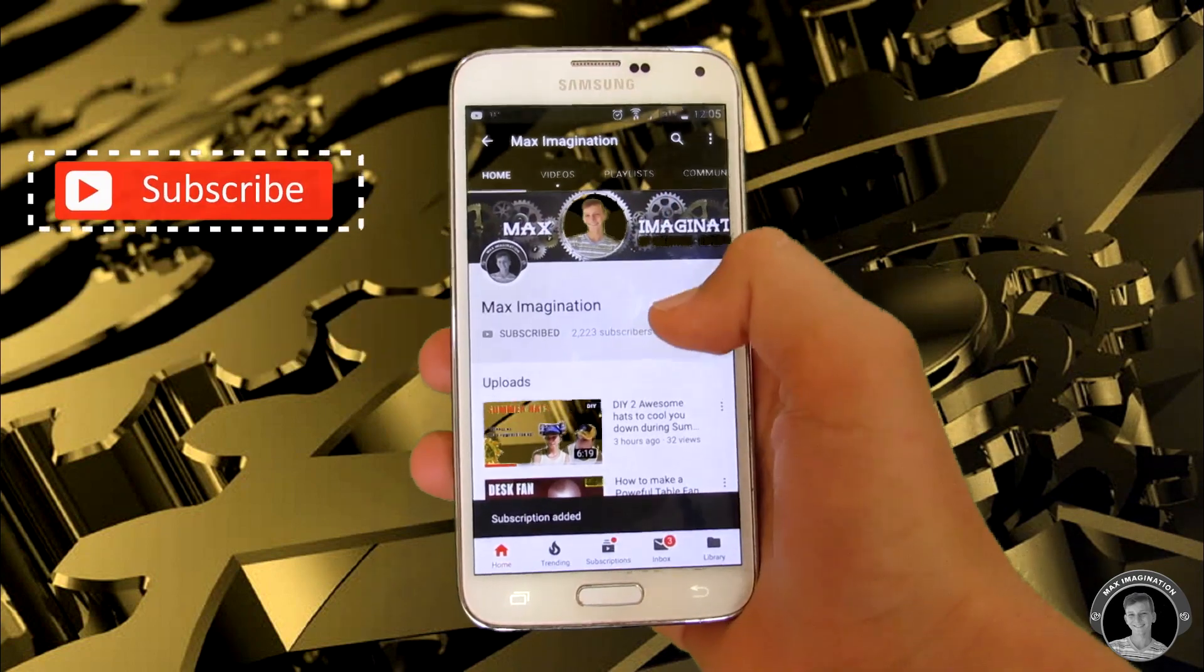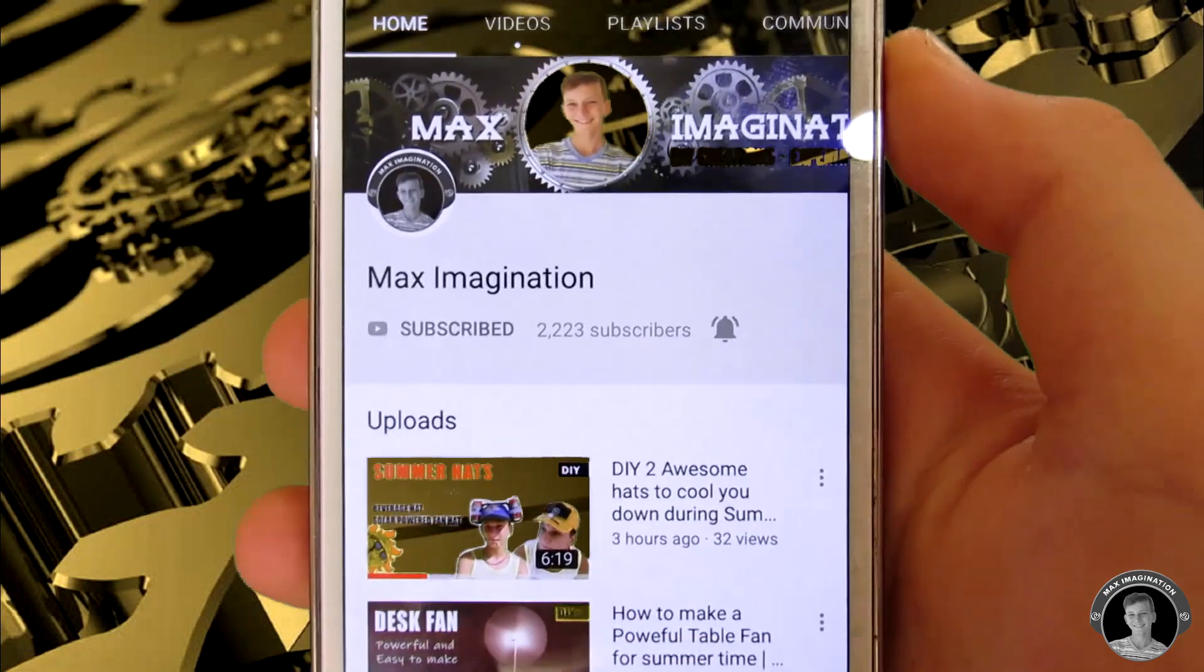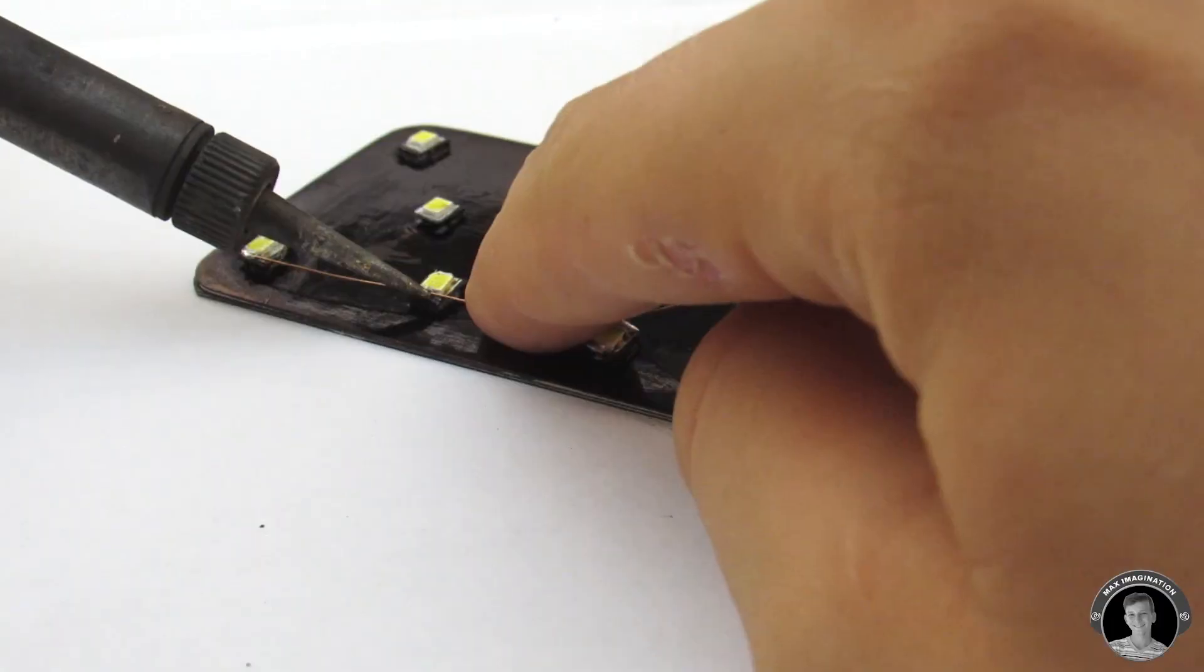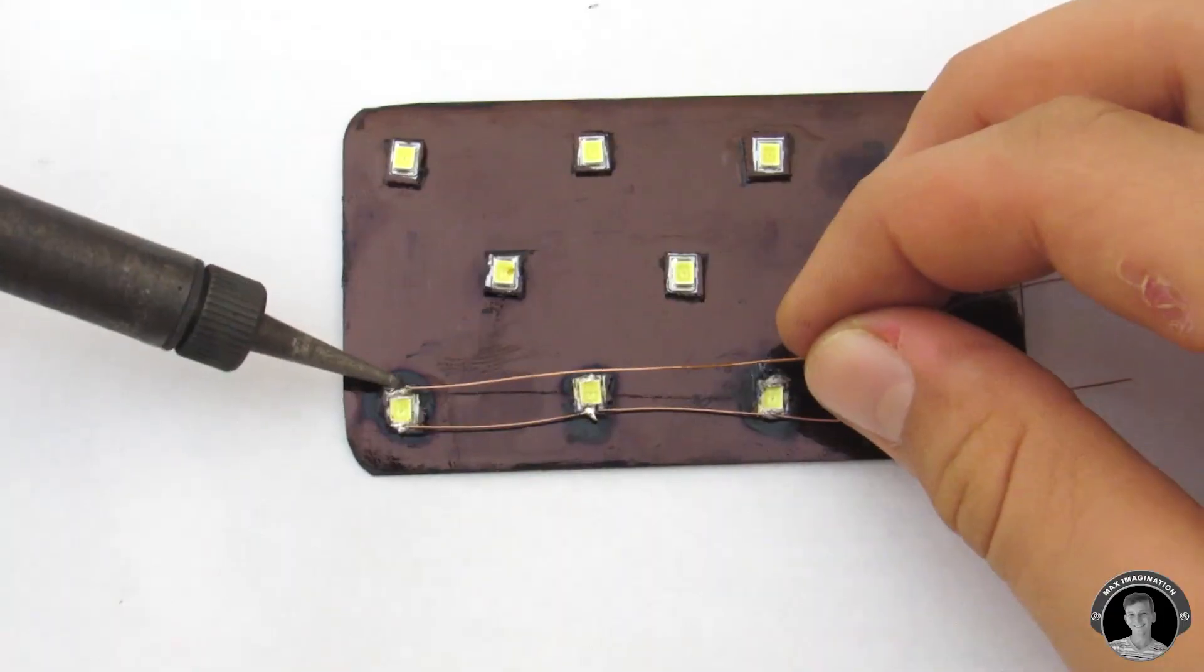And guys, don't forget to subscribe and turn on that notification bell not to miss any of my new videos. Okay, let's get back to the video. Now solder a section of copper wire across the negative side of the LEDs and another one on the positive side of the LEDs.